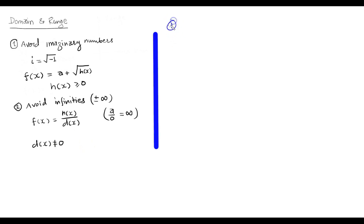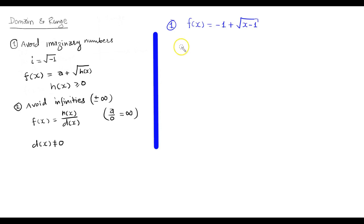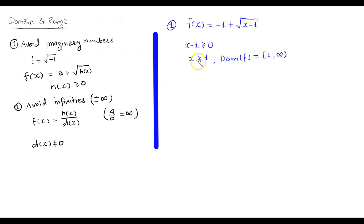Let us take Example 1. Suppose we have a function f of x equals to negative 1 plus the square root of x minus 1. In this function there is a square root expression, so the quantity underneath the square root must be greater than or equal to 0. Therefore, x minus 1 must be greater than or equal to 0. Solving this inequality gives x is greater than or equal to 1. Thus, our domain would include 1 and go up to infinity, written with a square bracket: [1, ∞).